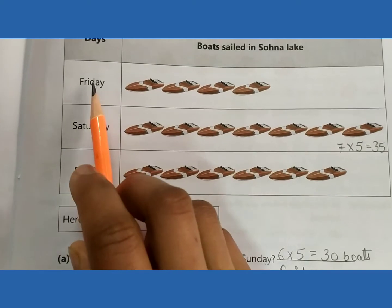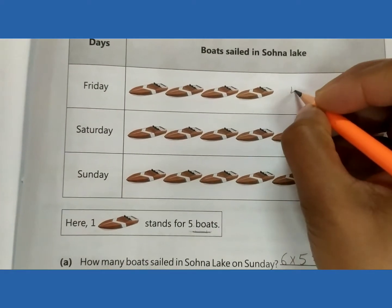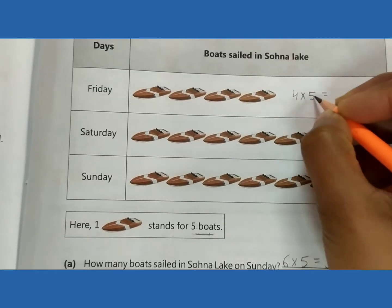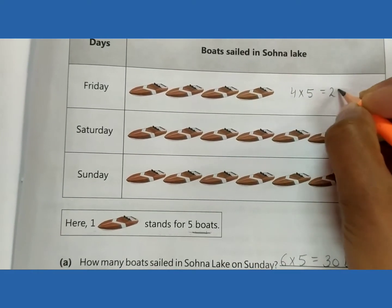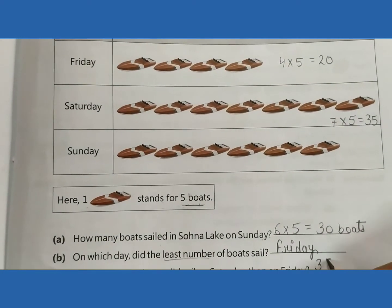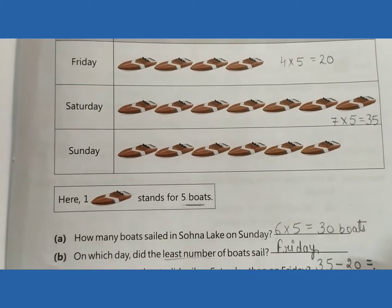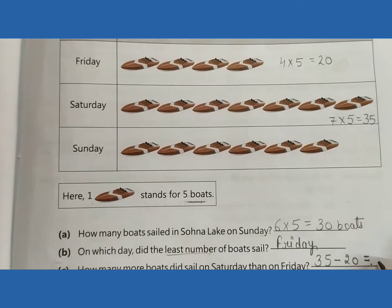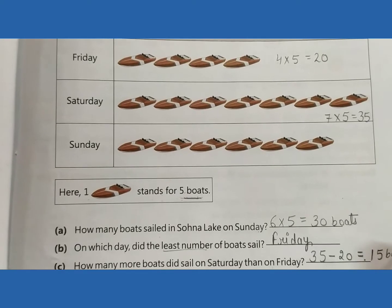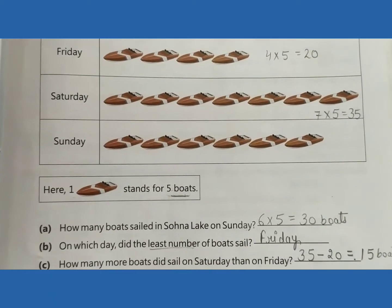On Friday: 1, 2, 3, 4 boats, multiply by 5. 4 multiplied by 5 equals 20. So 35 minus 20 equals 15 boats. This is the answer.